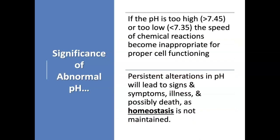So why do we care? If the pH is too high or too low, the speed of chemical reactions becomes inappropriate for proper cell functioning. Think back to our arrhythmias and the sodium-potassium pump — that's one chemical reaction that can be disturbed by an abnormal pH. Persistent alterations in pH will lead to signs and symptoms, illness, and possible death as homeostasis is not maintained.